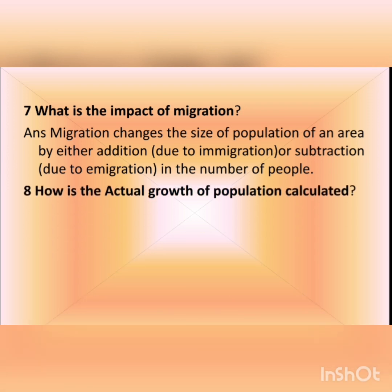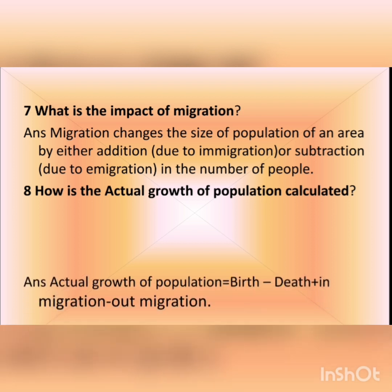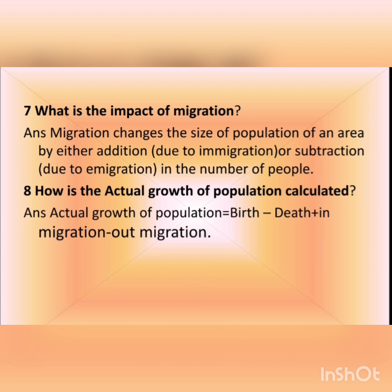The eighth question is: how is the actual growth of population calculated? The answer is: Actual Growth of Population = Births minus Deaths plus In-migration minus Out-migration.